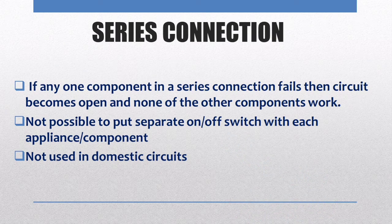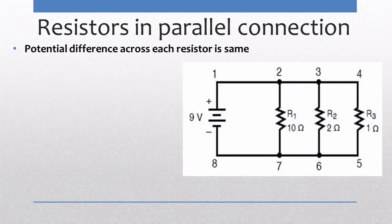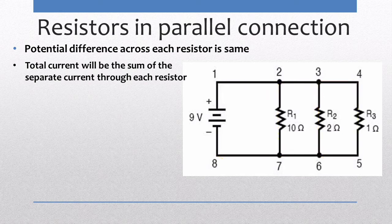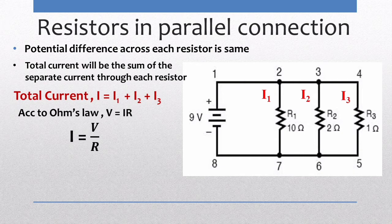Now let's understand what happens when resistors are connected in parallel. In a parallel connection the current splits at each junction. The total current is the sum of the separate currents passing through each resistor, but the potential difference across each resistor is the same. To find the total current we use I = I1 + I2 + I3 for a circuit with three resistances.